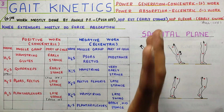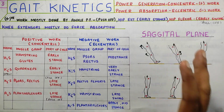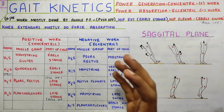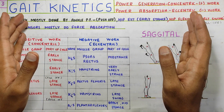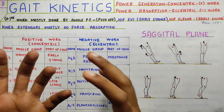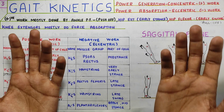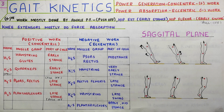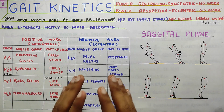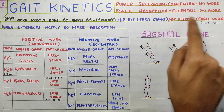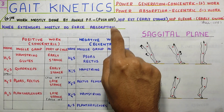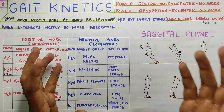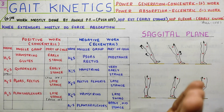That covers how power generation and absorption occurs in gait. Your body does not work like a robot with one movement at a time — everything happens together with agonist and antagonist contraction. Power generation and absorption happen together, and that's how we get a smooth gait. To have an overall understanding, focus on the three main power generators and absorbers, and add on hip flexors and extensors doing eccentric work, plus tibialis anterior and plantar flexors.